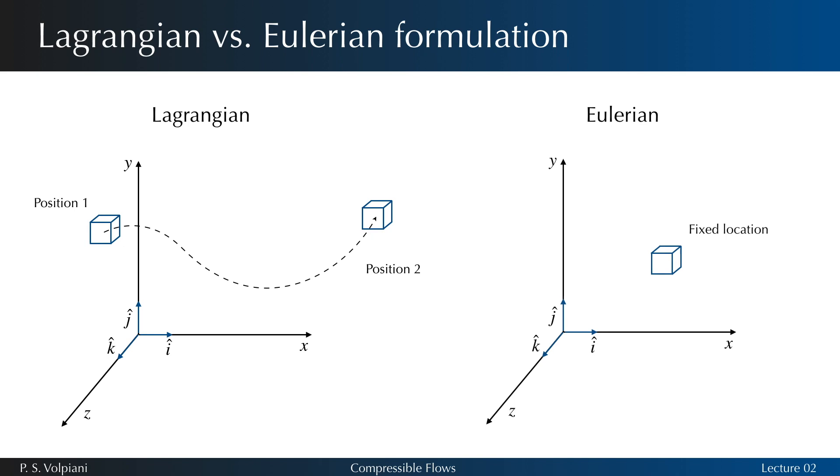On the other hand, the Eulerian approach focuses on a specific location in the flow region as time passes. This can be visualized by sitting on the bank of a river and watching the water pass the fixed location.